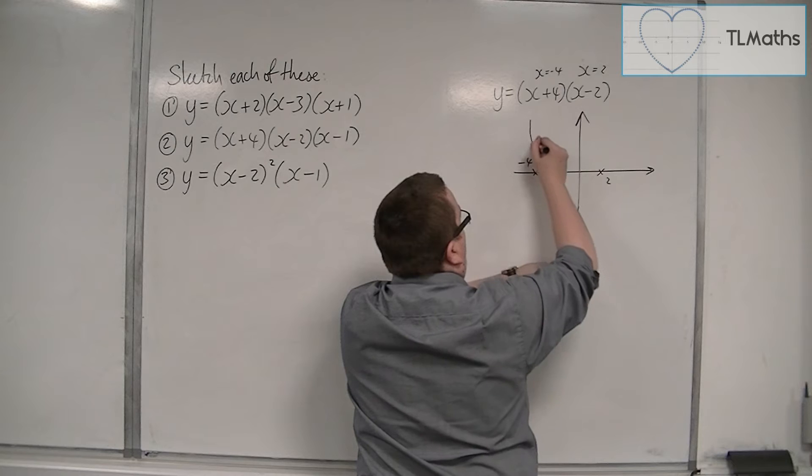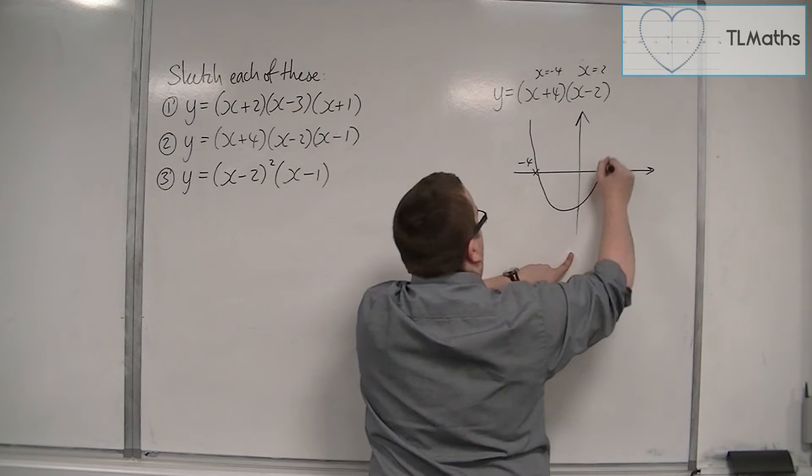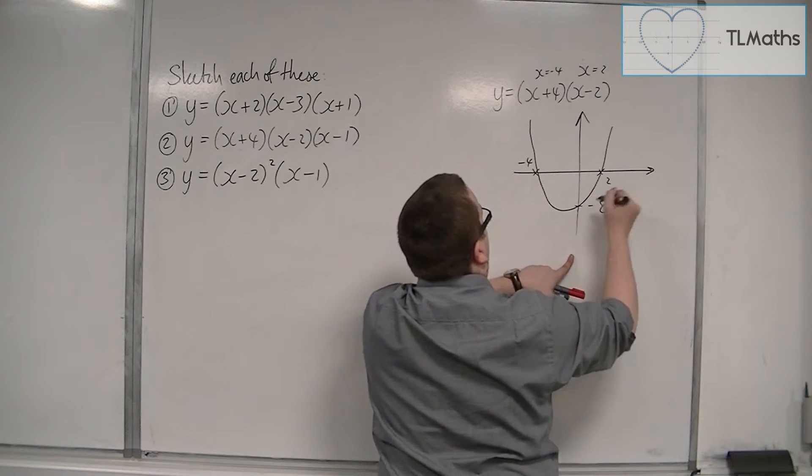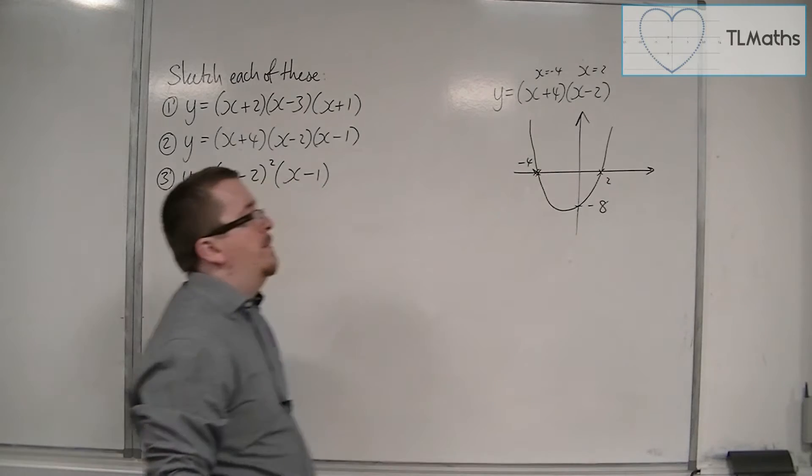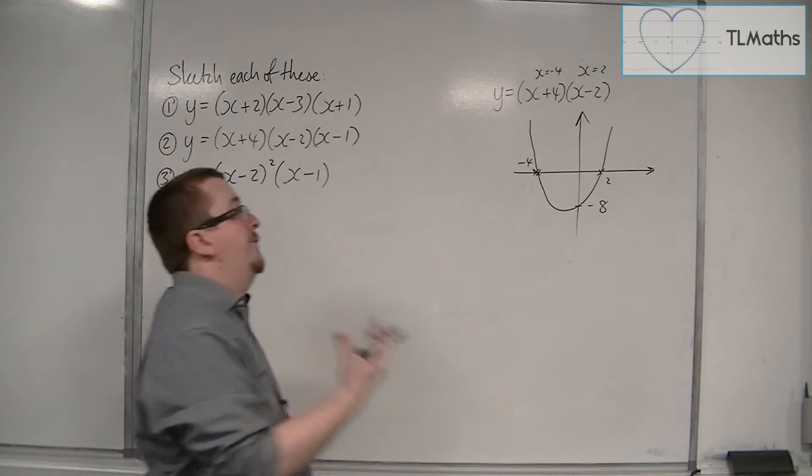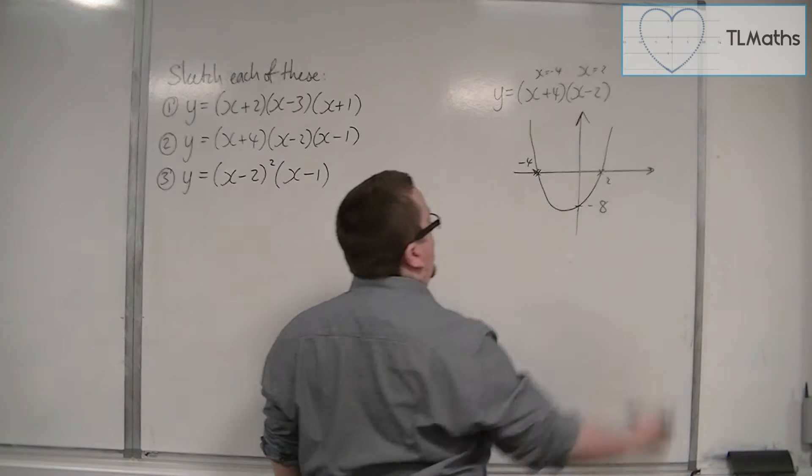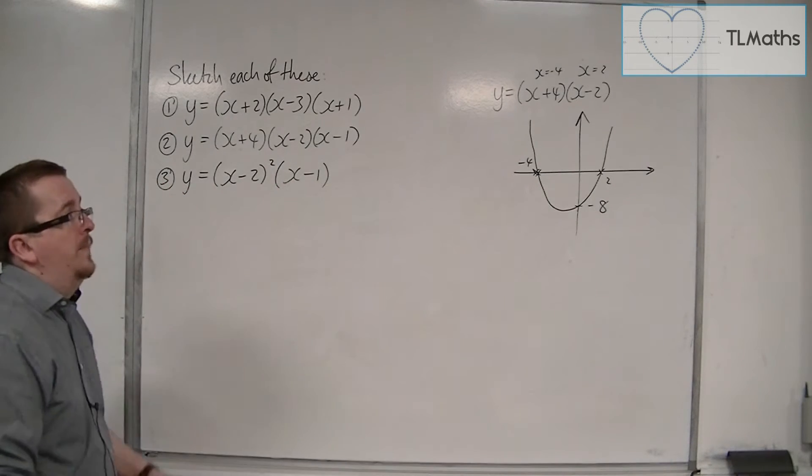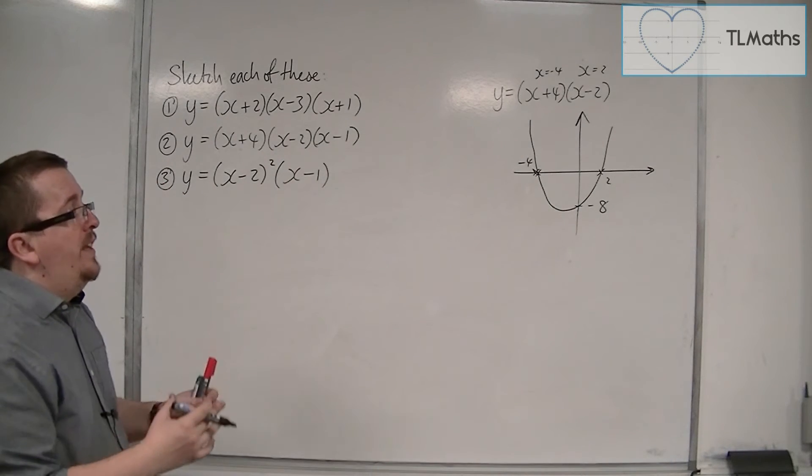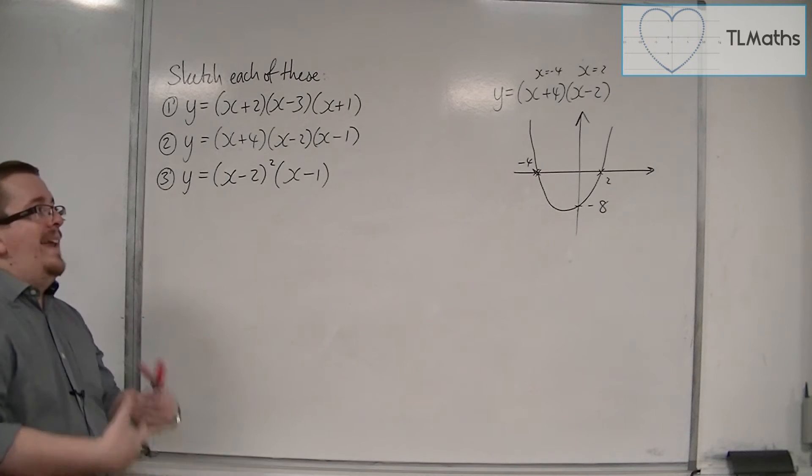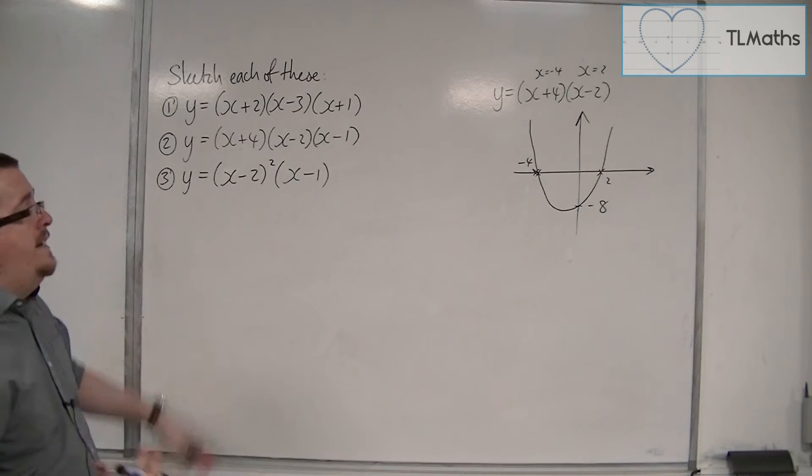So the parabola would look something like this. You can see that the vertex is to the left of the y-axis here. So that is how we can use the information of the factorised form in order to guide us in sketching cubics.